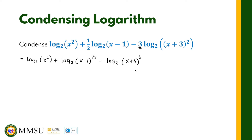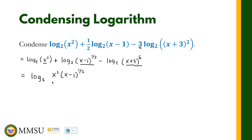Remember all expressions should have the same base — here base 2, base 2, and base 2 — for them to be combined or condensed. We employ the product rule and the quotient rule: all positive terms go in the numerator and all terms with a minus sign go in the denominator. So x squared and x minus 1 raised to one-half are in the numerator, giving us the logarithm with base 2 of x squared multiplied by x minus 1 raised to one-half, divided by x plus 3 raised to 6. This is now a single logarithm equivalent to the given expression.